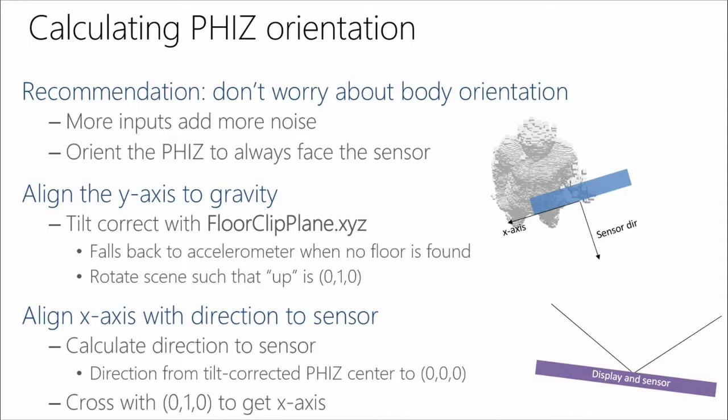Once you've rotated in y-space, rotate the x-axis — the direction for left/right movement on screen. Create a sensor direction vector from the center of the PHIZ to the sensor — that's your z-axis. Take the cross product of that with the up vector (0, 1, 0) to get the x direction, then rotate your scene so the PHIZ is facing the sensor. This is similar to setting up a view camera in graphics.